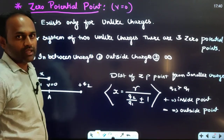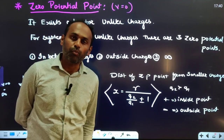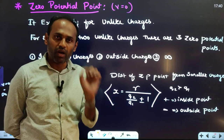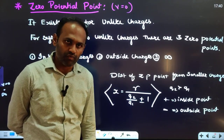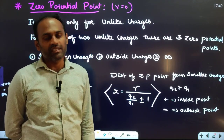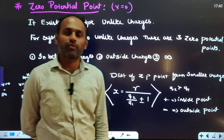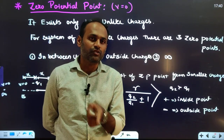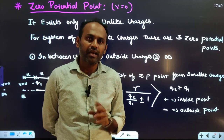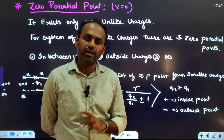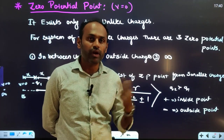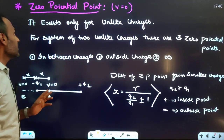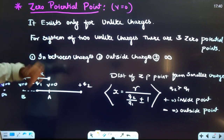For neutral point — where net electric field is zero — we have the shortcut formula: x = R / (√(q₂/q₁) ± 1), where x is the distance from the smaller charge, q₂ is greater, q₁ is smaller. Use positive for like charges and negative for unlike charges.